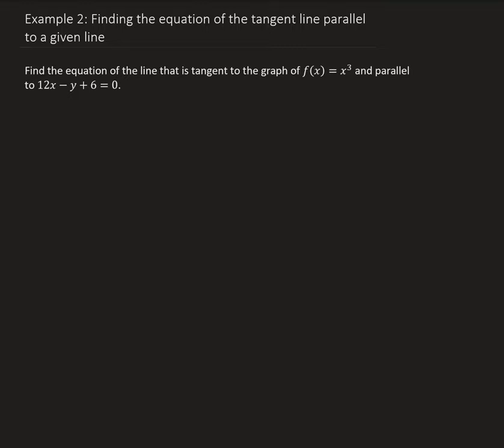In this example, we want to find the equation of the line that is tangent to the graph of x cubed and parallel to the line that you see there. The key here is that we want to find the tangent line that has a slope parallel to this line. So we need to go ahead and write this in the form of y equals mx plus b, so that way we can identify the slope of this line.